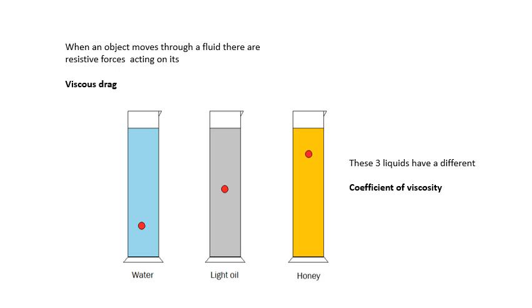If you imagine dropping a marble into each of those, what's going to happen? There will be a lot more friction force. When it reaches terminal velocity, the friction force will be equal to the weight, but initially at any particular velocity there will be more friction force if the fluid is more viscous.